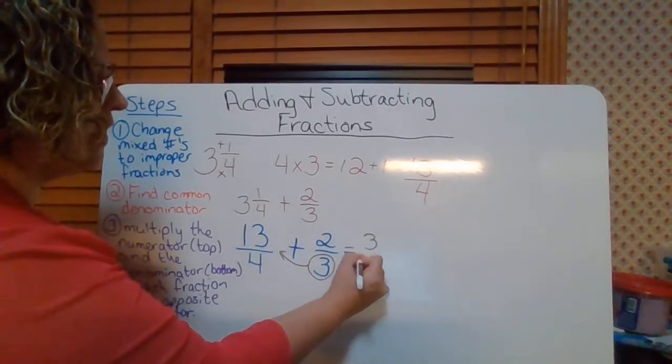And then your very last step — step number six — is to convert back to a mixed number. That's your last step.